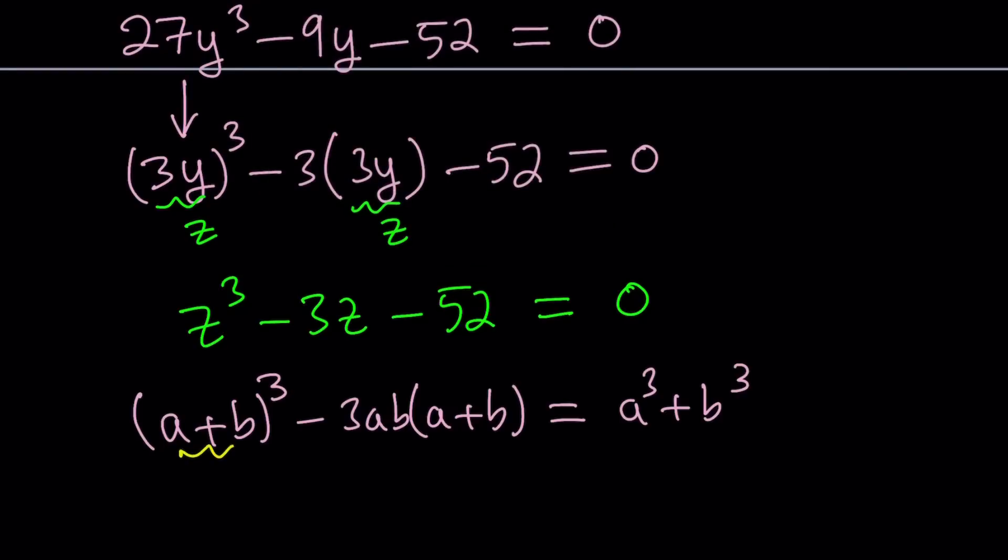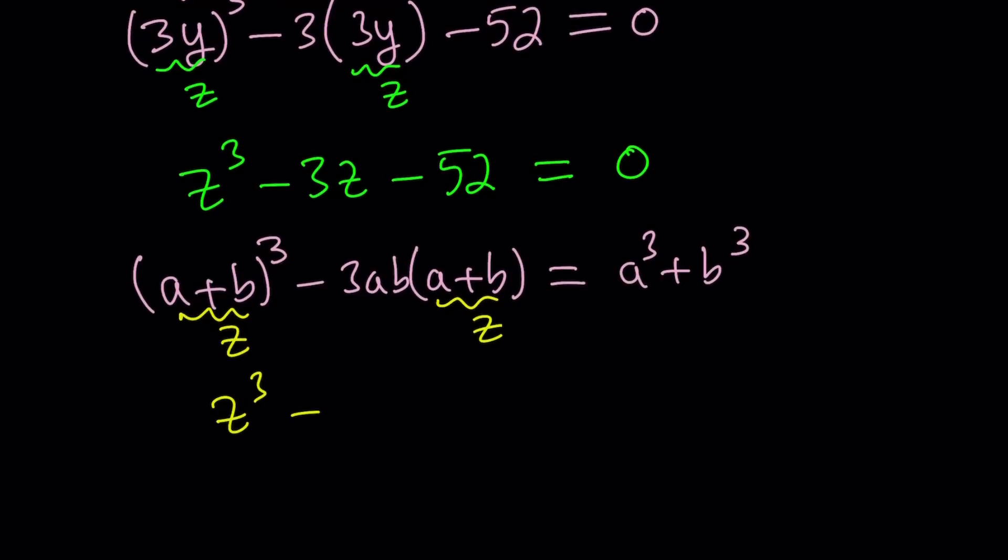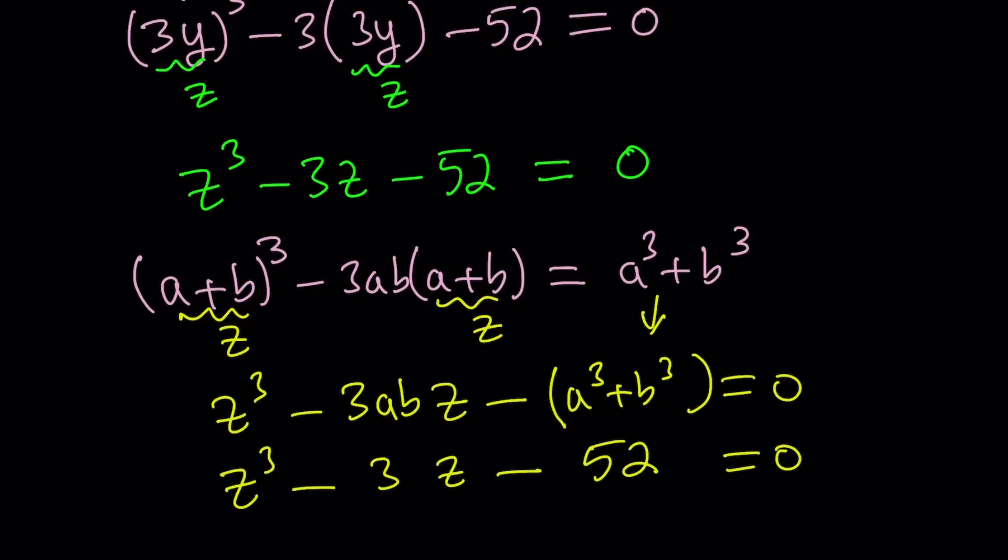We're going to replace a plus b with z. So suppose a plus b is z, then we get something like z cubed minus 3abz minus a cubed plus b cubed equals zero. And then compare this to our equation. Write them like this, and hopefully you'll get a better idea. Look at the one-to-one correspondence. 3ab is the same as 3, and this guy over here is the same as 52.